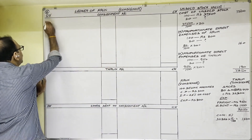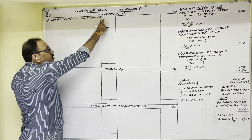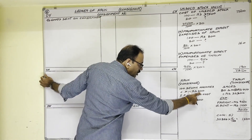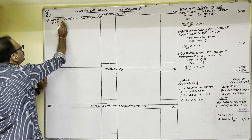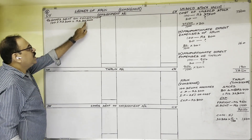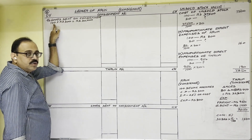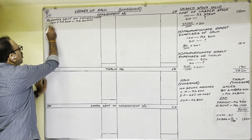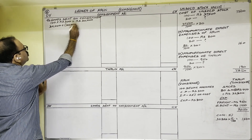First, the consignor sent goods — debit side. We should show the invoice price. As invoice price is given in the question, we show the invoice price of 100 machines. One machine cost price is 300, so 100 machines cost price is 100 × 300 = 30,000 rupees. This was given directly in previous problems, but here one machine cost is given, so we multiply by the total quantity of 100 machines.